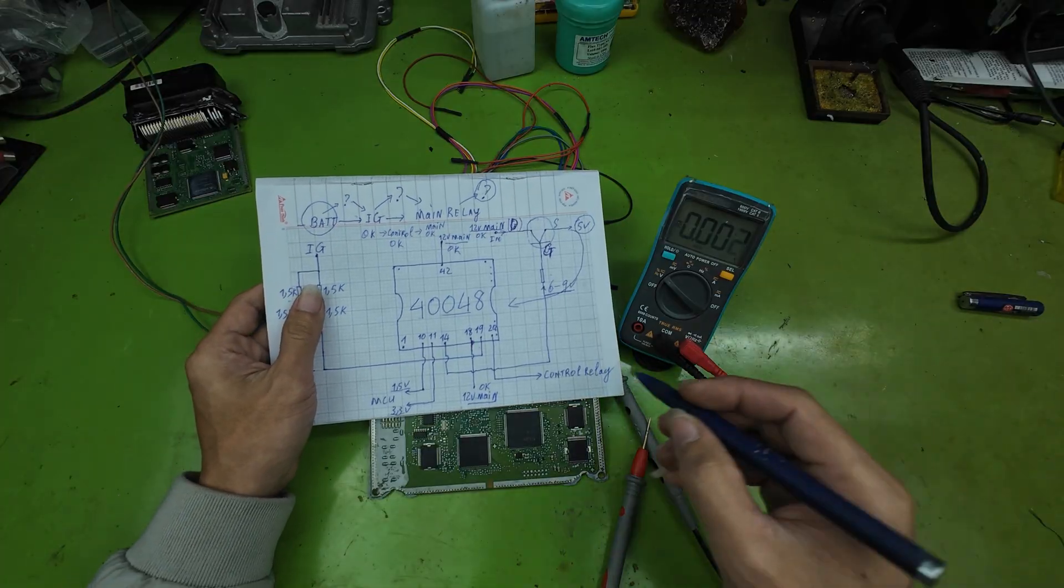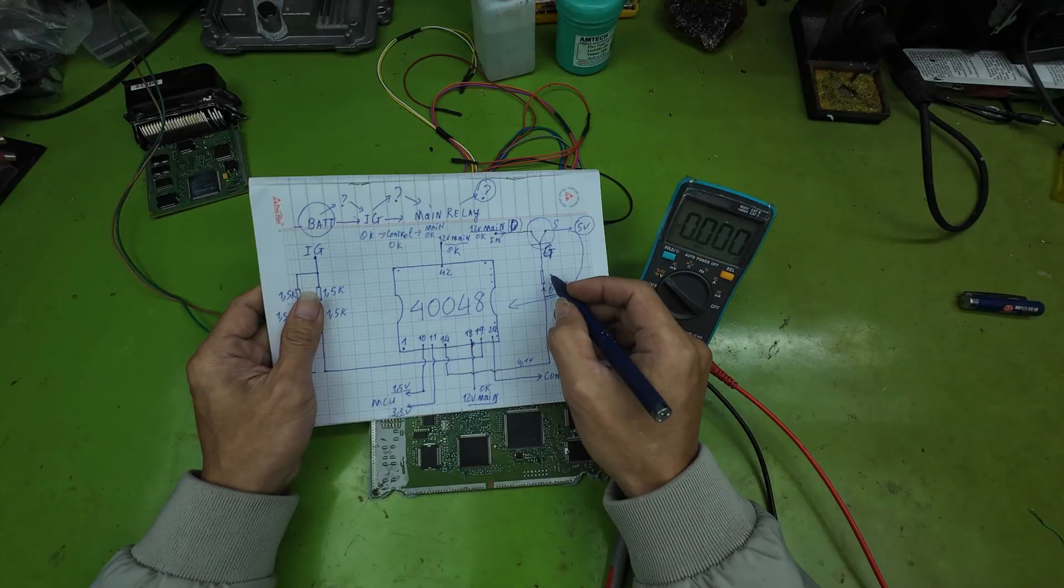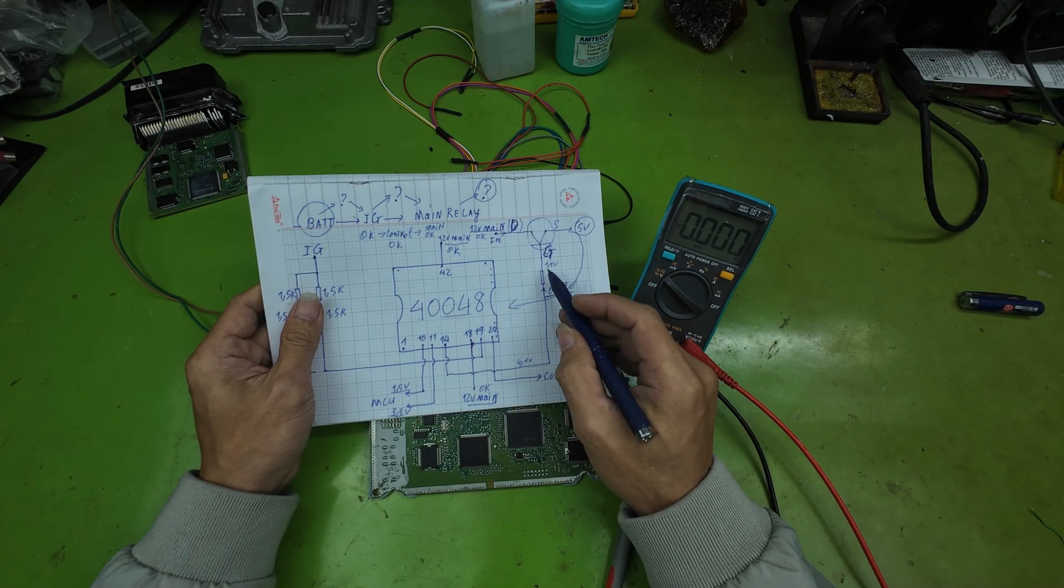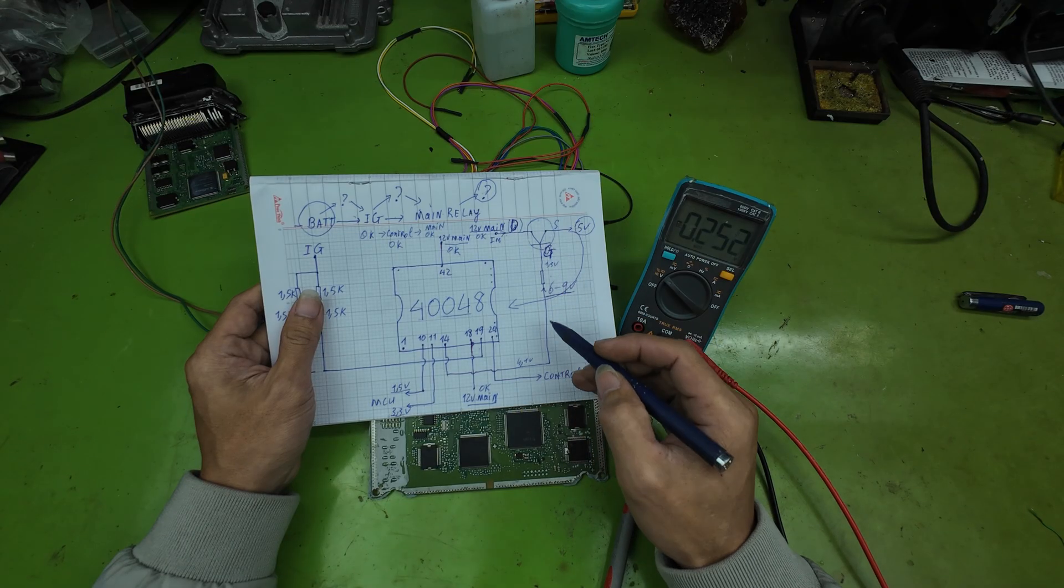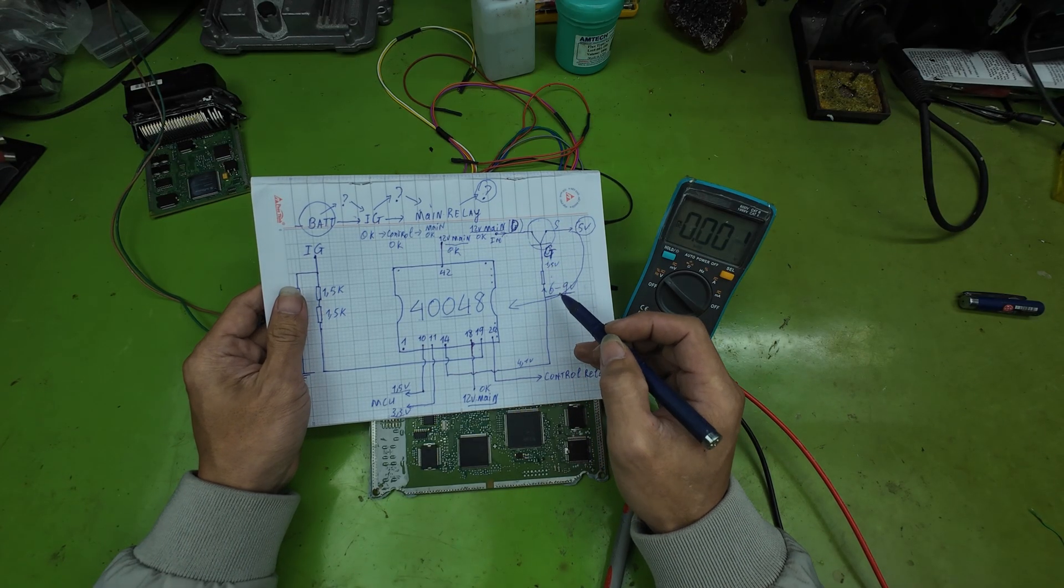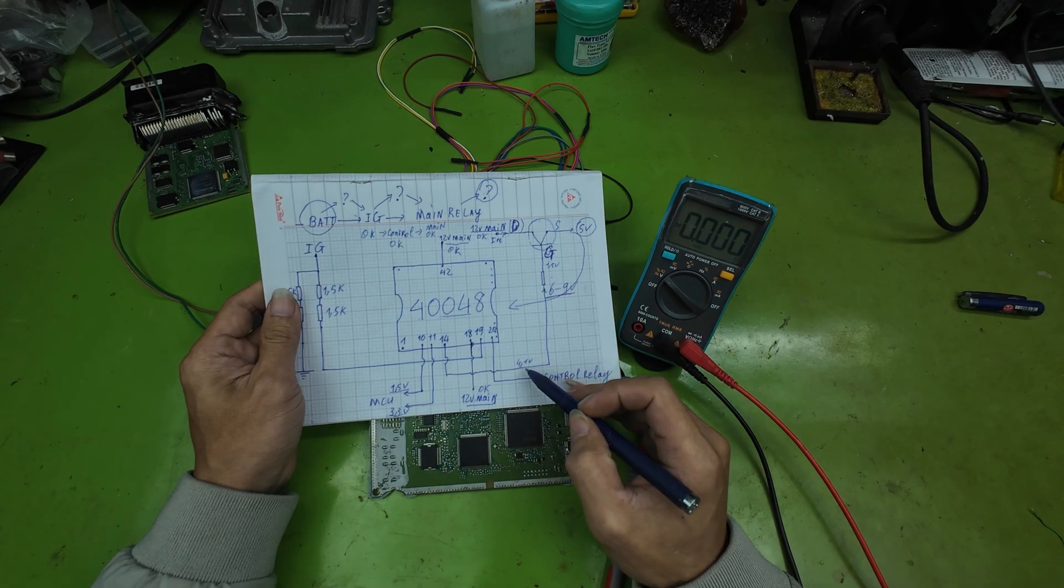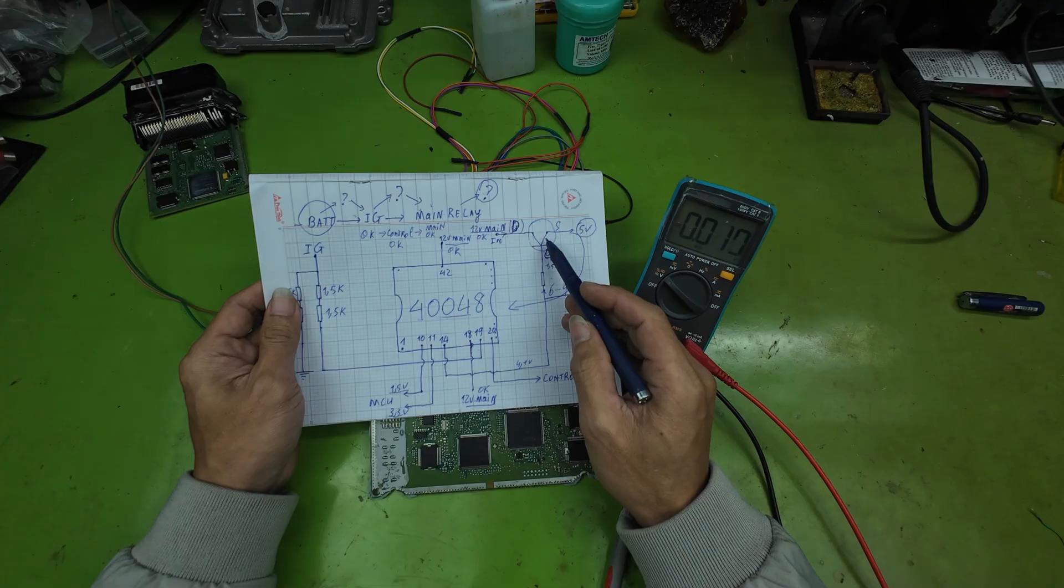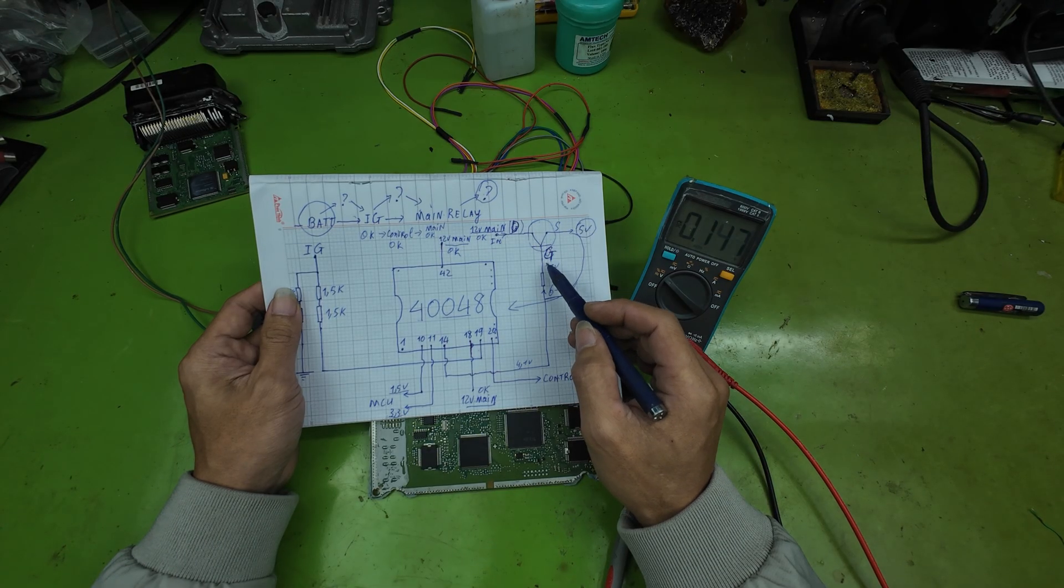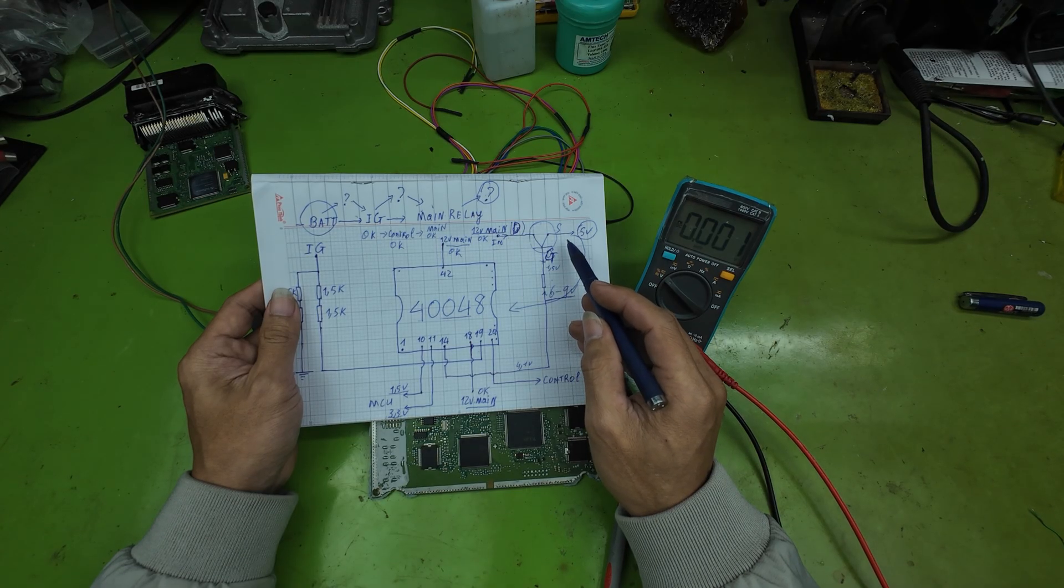Look at the schematic. From the IC output, I measure 4.2 volts. But at the MOSFET gate, I only get 1.5 volts. Based on this, my conclusion is that the MOSFET is internally shorted, causing the voltage to drop, because there is a resistor between the IC output and the gate to limit current. So we have identified the root cause. The 5-volt MOSFET is faulty, so the 5-volt rail is not generated, the main board receives no supply, and therefore the ECU does not operate.